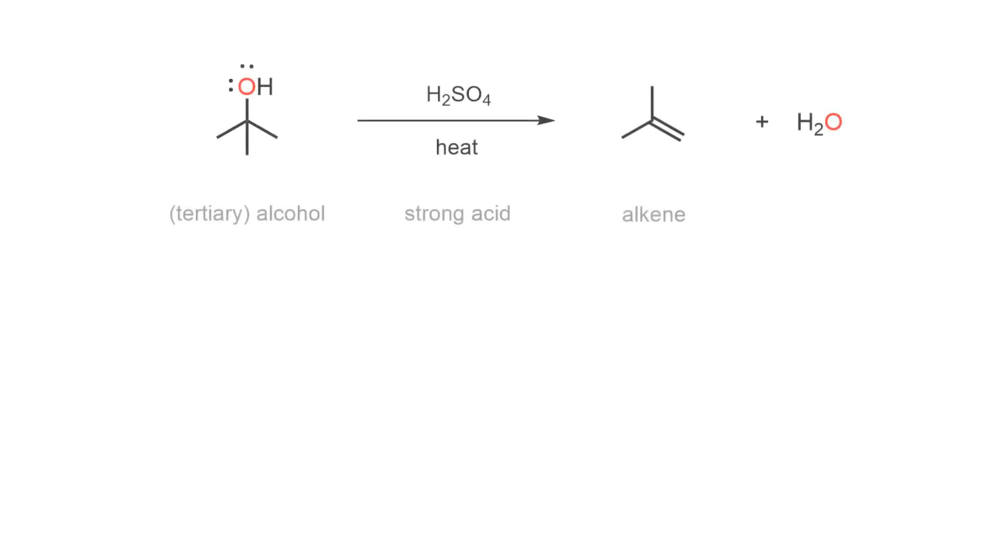In conclusion, when a tertiary or secondary alcohol reacts with strong acids such as sulfuric acid or phosphoric acid at high temperatures, an alkene is produced.